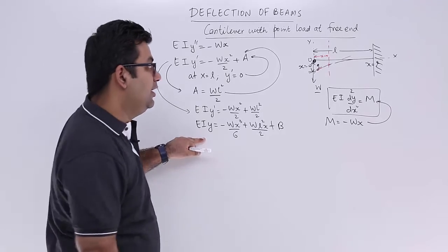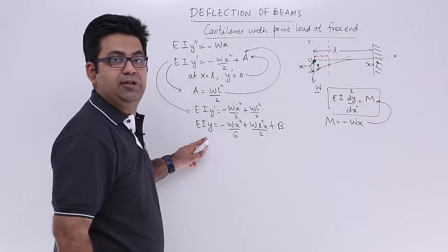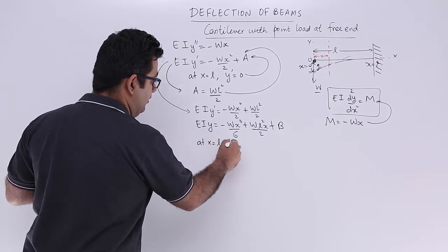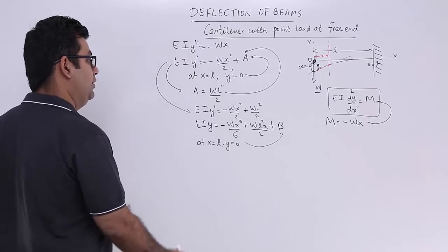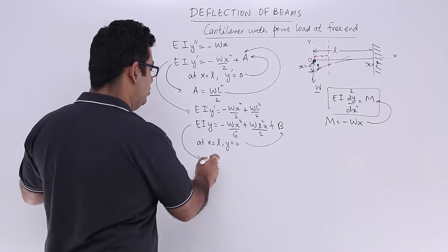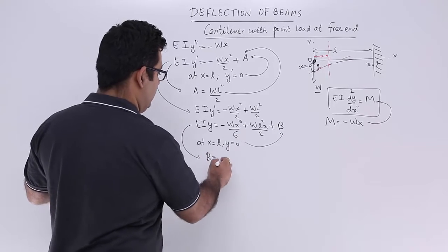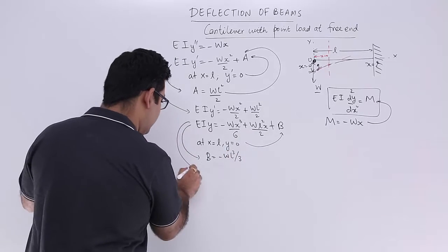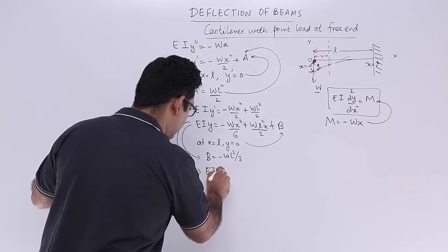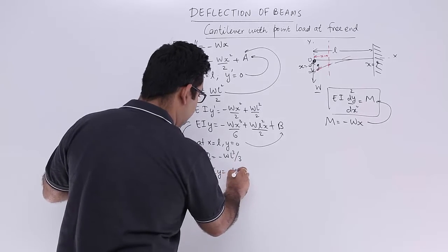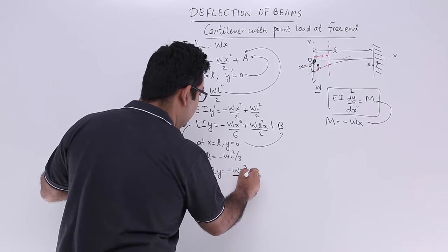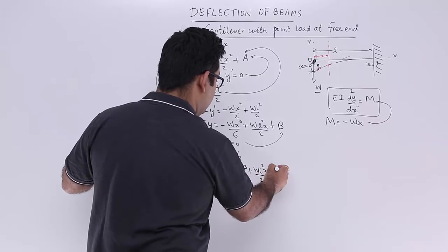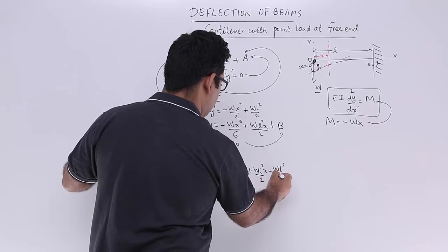For the deflection boundary condition: looking at the diagram, the deflection is zero at the fixed end — there is no deflection there. So at x equals L, y equals 0. Substituting into the equation gives the value of B as minus WL³ upon 3. The equation now becomes EI times y equals minus Wx³ upon 3 plus WL² x upon 2 minus WL³ upon 3.